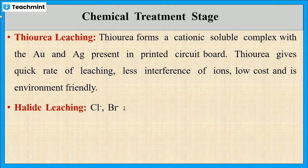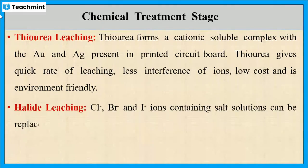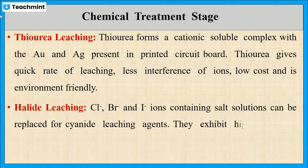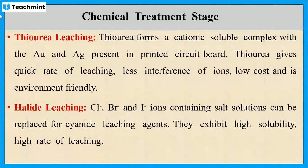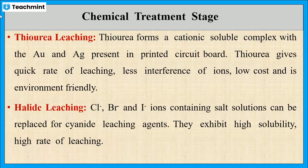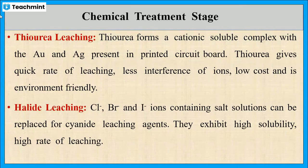Halide solutions containing chloride, bromide, and iodide ions can also be used as leaching agents as an alternative to cyanide leaching. Halide solutions exhibit high solubility and a high rate of leaching.